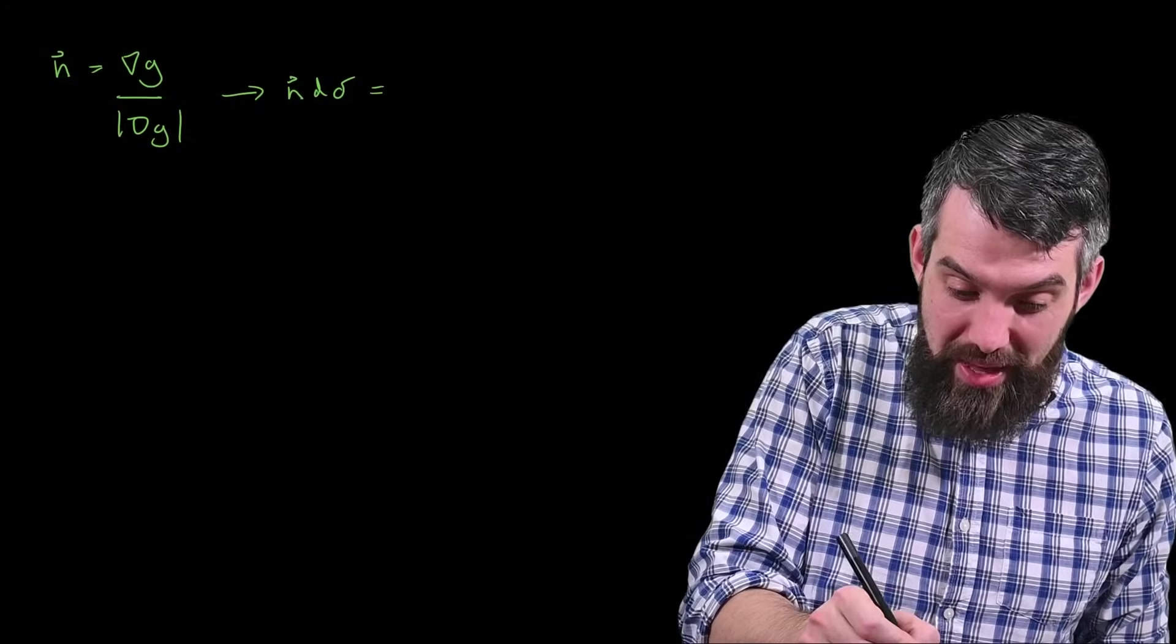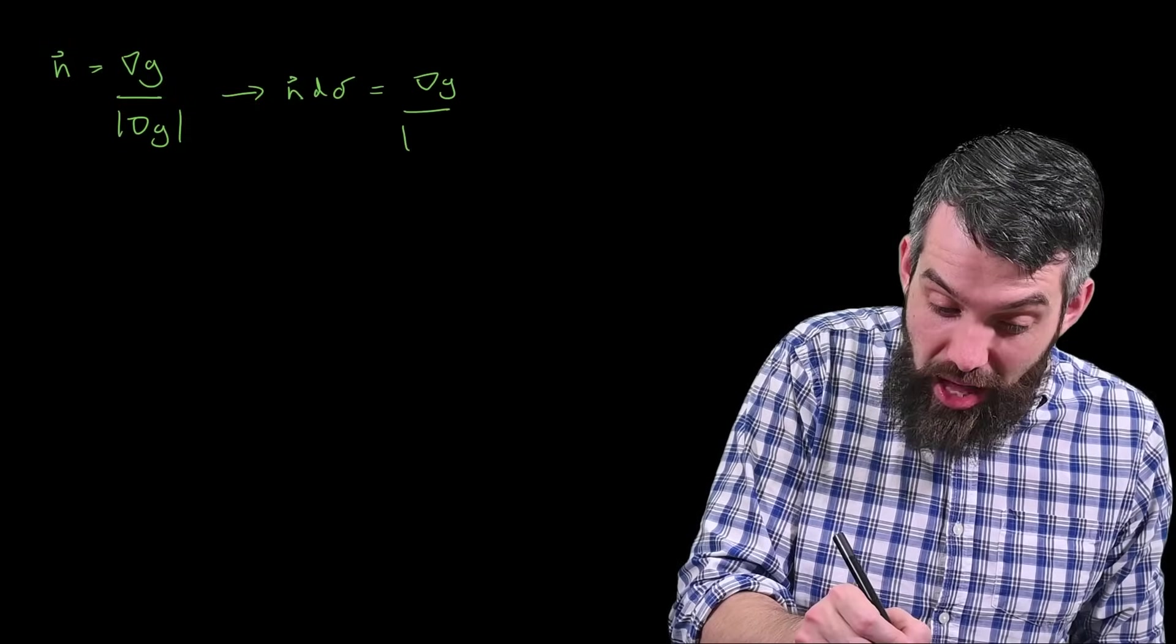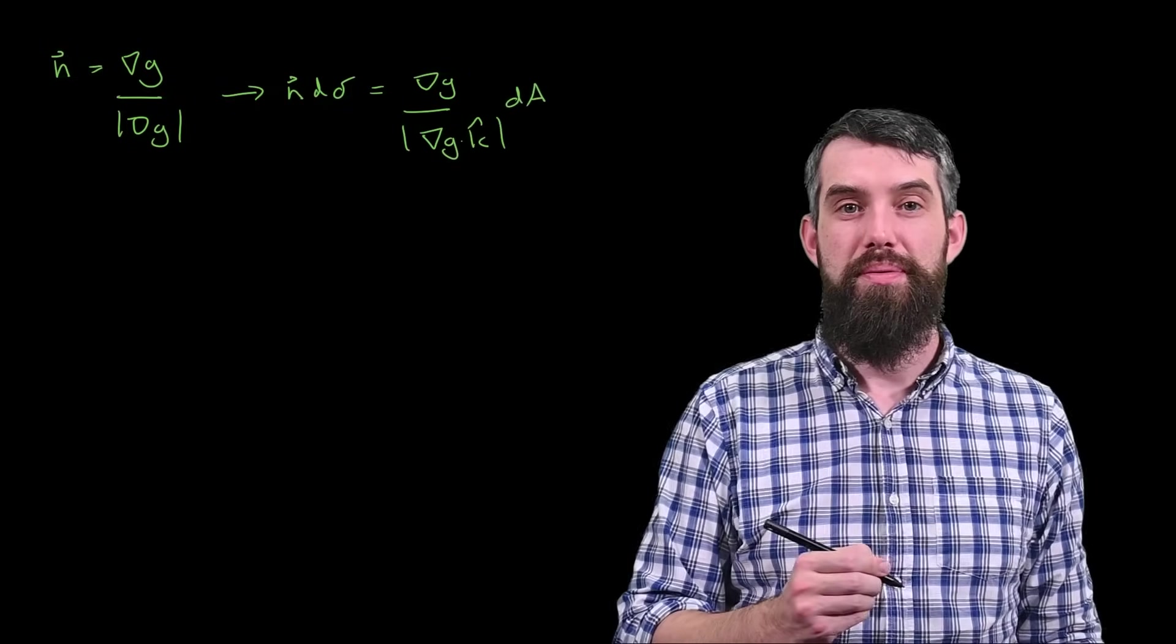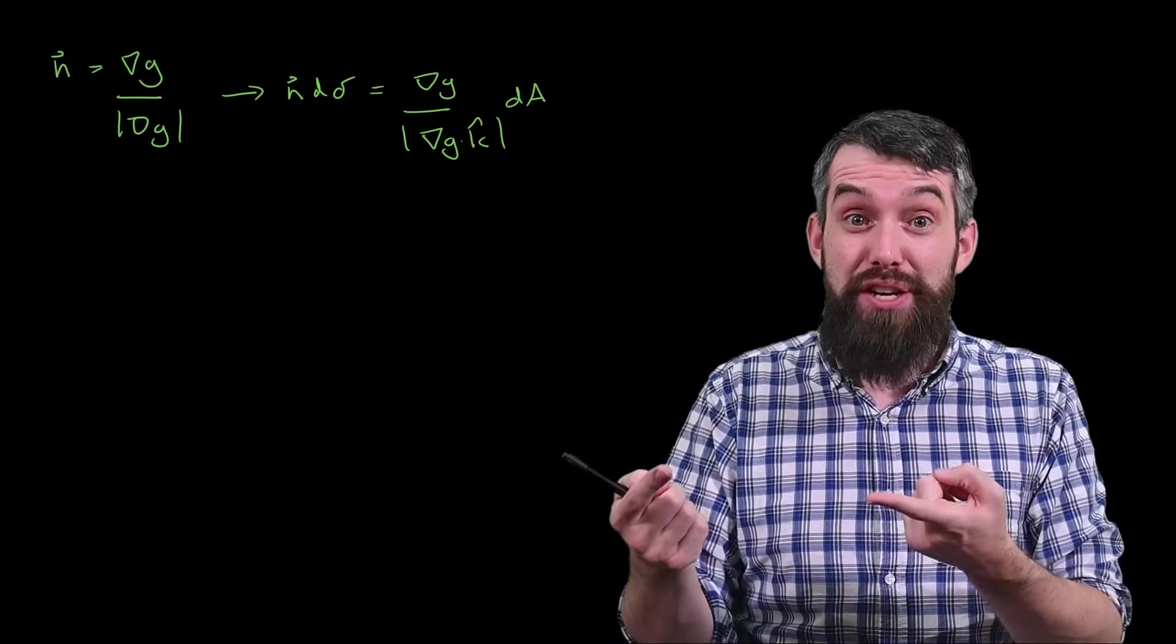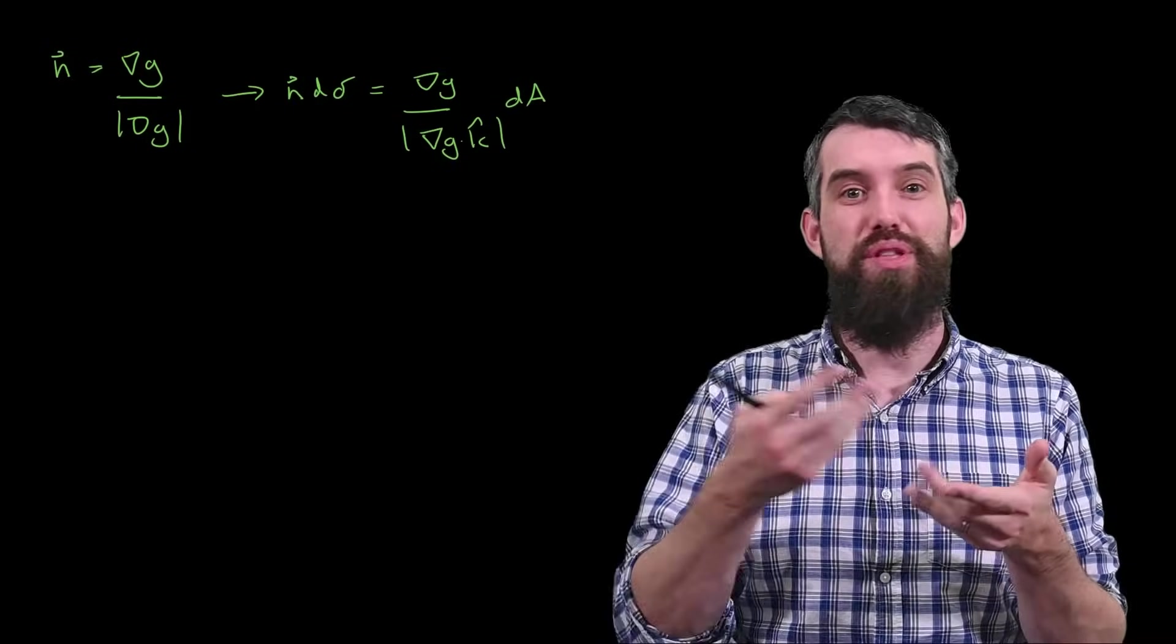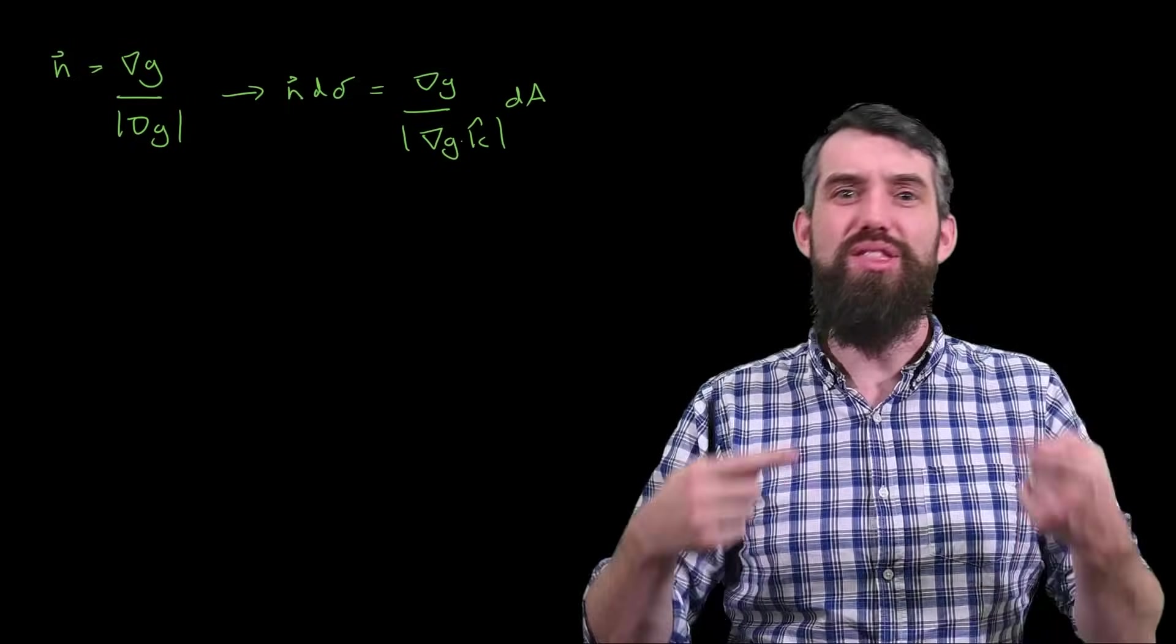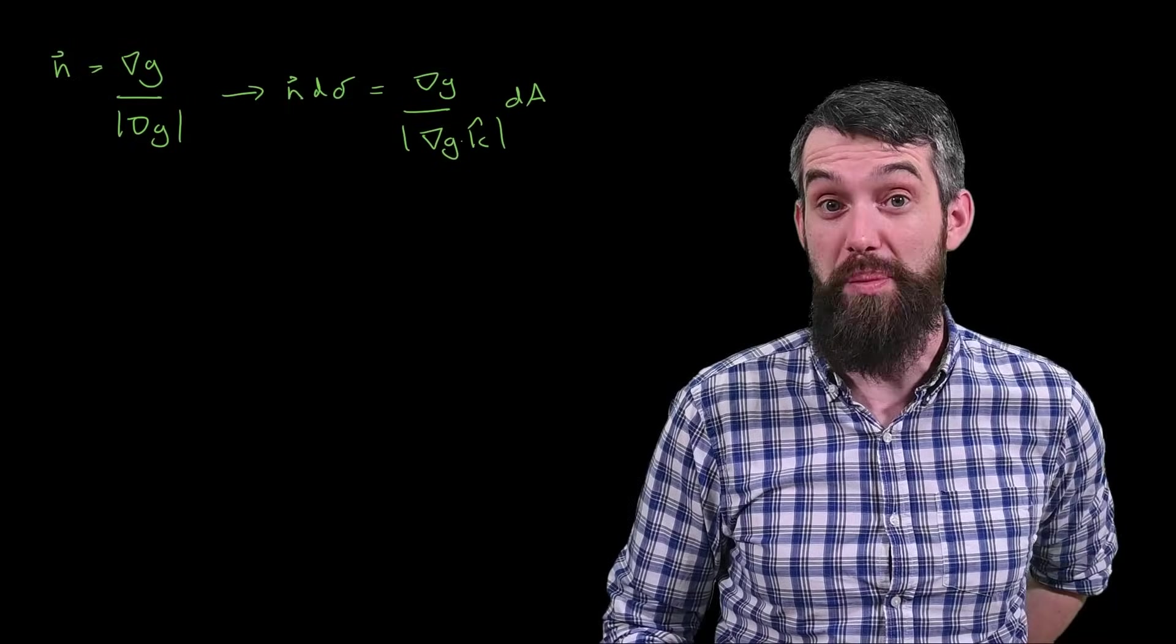So if I do this, then what I would be getting would be the gradient of g divided by the length of the gradient of g dotted with k-hat, and then a little element of area. The shift from a little element of surface area d-sigma to d-a has this stretching factor, the magnitude of the gradient of g divided by the magnitude of the gradient of g dotted with k-hat, because the surface is projected onto the xy plane and the k-hat is just pointing straight up. We've seen that, the length of the gradient g just cancels in both cases, and it's just easier to go with this formula directly.